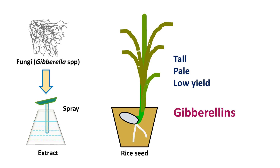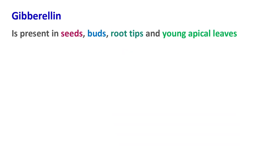One of the prominent effects of this compound is to cause cell elongation. Because it has a role in plant cell elongation, it should also be made by the plant itself. Further research showed that gibberellin is present in large quantities in young germinating seeds, root tips and young apical leaves. It also had a very important role in breaking the dormancy of seeds.